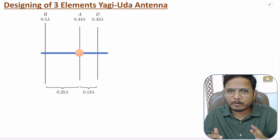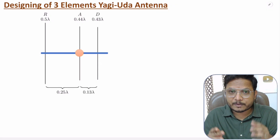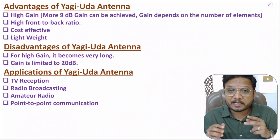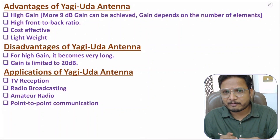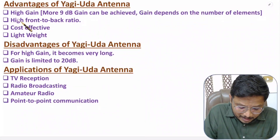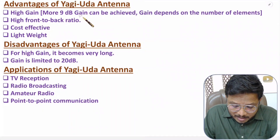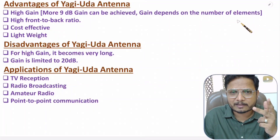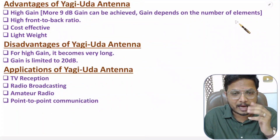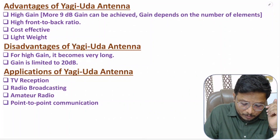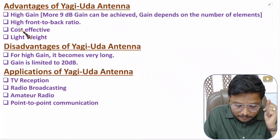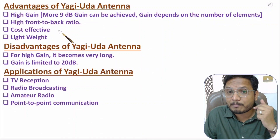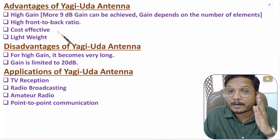Now I will discuss advantages, disadvantages, and applications of Yagi-Uda antenna. Yagi-Uda antenna has directional radiation characteristics, based on which it offers many advantages. It has higher gain — more than 9 dB gain can be achieved, and gain depends on the number of elements. So if you increase the number of elements, you will have higher gain. It also has a high front-to-back ratio because the reflector element on the back side reflects power from the back side.